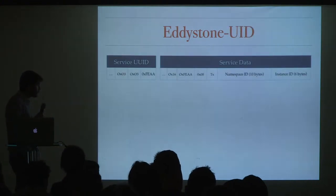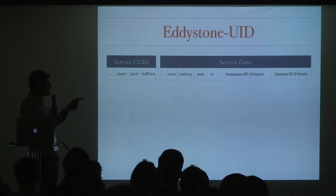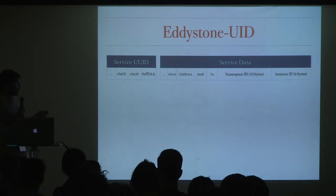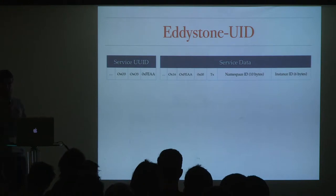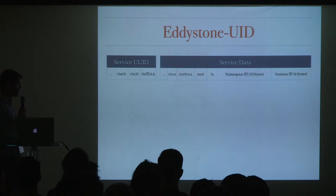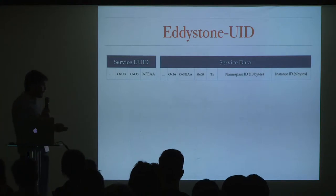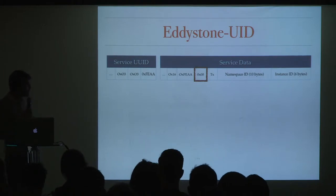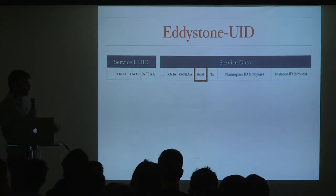The first frame is the Edistone UID. Basically this frame has the beacon tell the devices around, 'this is my ID.' The frame is divided into two parts: a service UID, which is specified by the Bluetooth core specification — Edistone frames are in a way standardized. Then you have a service data portion where you put the data you want to broadcast. If you encounter an Edistone frame with the value zero at this precise offset, you know it's a UID frame. You have 16 bytes to store an ID.